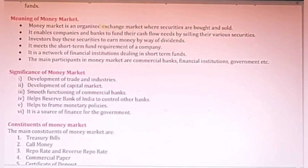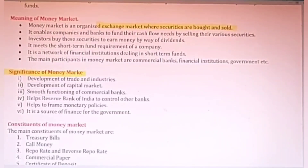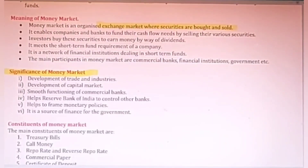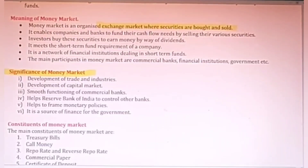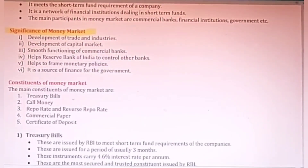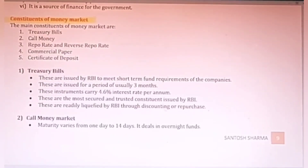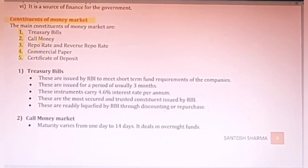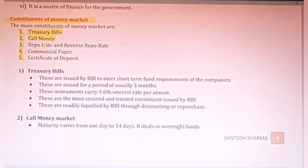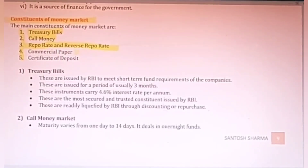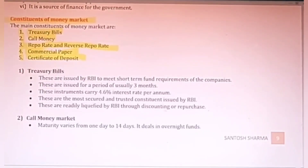Then we have the money market — where securities are bought and sold. You should know why this money market is important: it mobilizes savings, helps to earn foreign exchange, and there are many other benefits. The main constituents of the money market include treasury bills, call money, repo rate and reverse repo rate, commercial paper (CP), and certificate of deposits. These are the main components traded in the money market to raise short-term money.